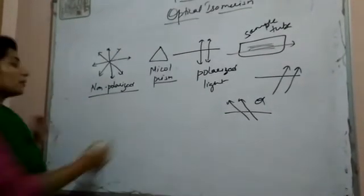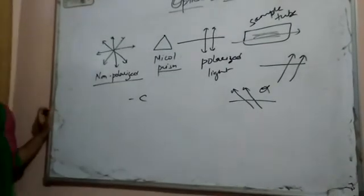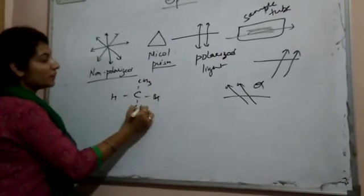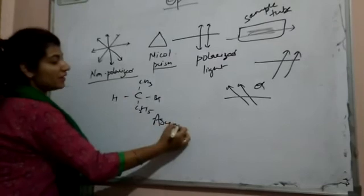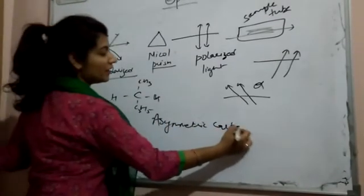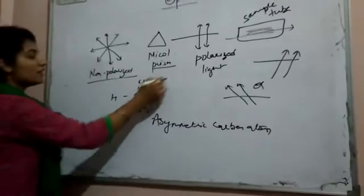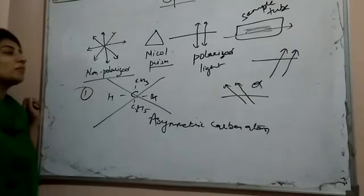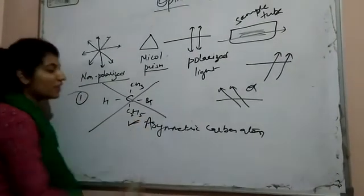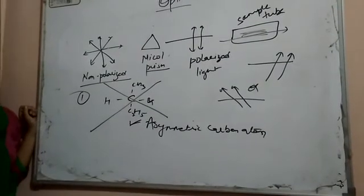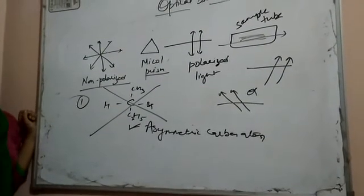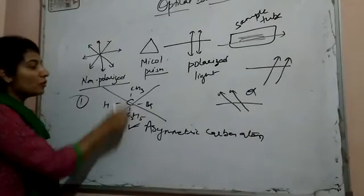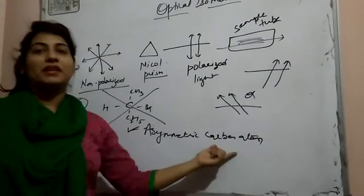The first point is about the carbon — it has 4 valencies. If there is any carbon present where all 4 valencies are satisfied with different atoms or different groups of atoms, then we call that compound an asymmetric carbon atom. Asymmetric means you cannot get an equal half in any part. So the first condition is that the compound should be asymmetric in nature — carbon has 4 valencies, and if all 4 are satisfied with different atoms or groups of atoms, that carbon atom is known as an asymmetric carbon atom.